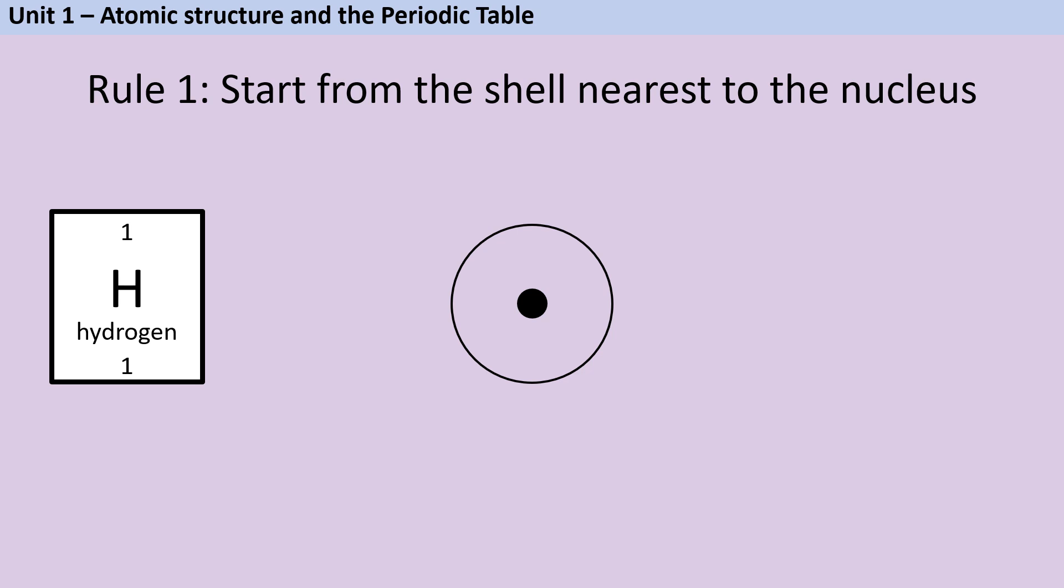Hydrogen has a single electron and the rule is that we're always going to place electrons as close to the nucleus as we can. So for hydrogen we're only going to make use of the first shell and we're going to add our first electron to that shell. We can also write a numerical electron arrangement or electron configuration and at the moment we're just going to put a number one in brackets.